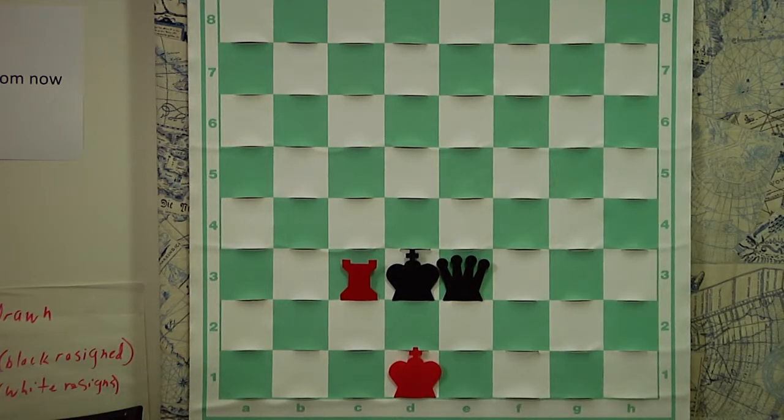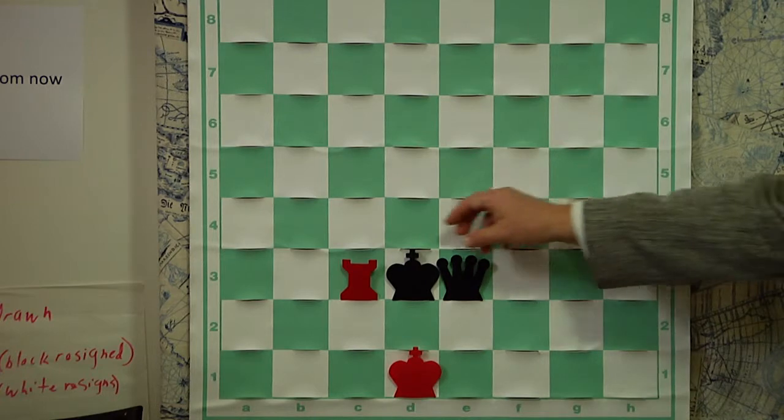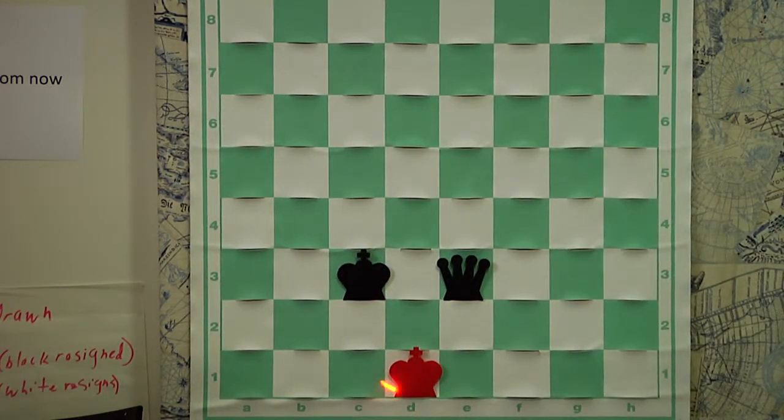My opponent, of course, was not very happy in this position when I offered my opponent a draw. This is another way a game can end in a draw. Stalemate, offering your opponent a draw. My opponent agreed to the draw because had my opponent captured the rook, my king, which is not in check, would have no legal move. Notice I cannot go to c1 because of the queen or c2 because of the king, and of course, the black queen controls all of these other squares.